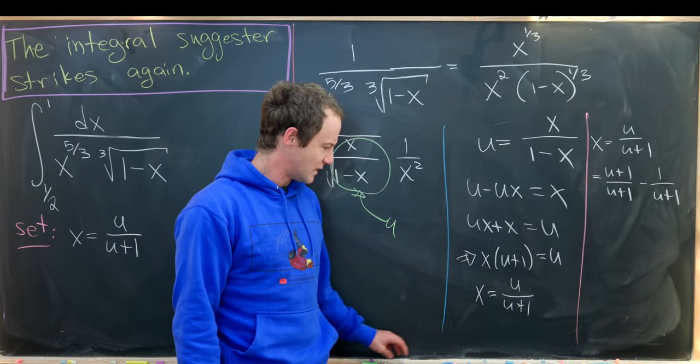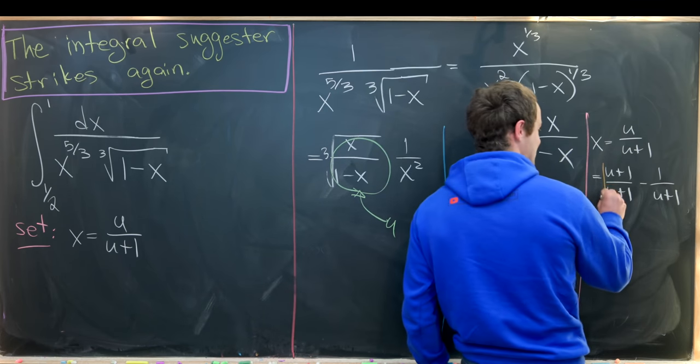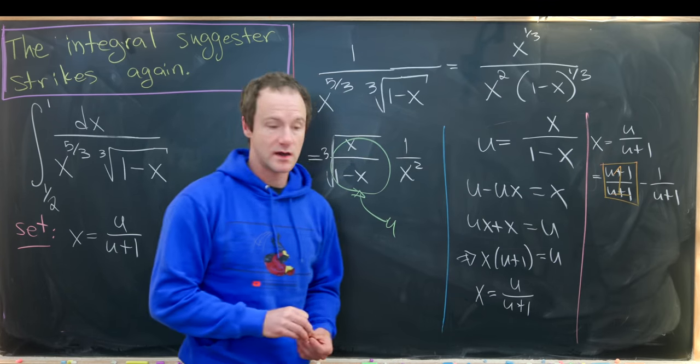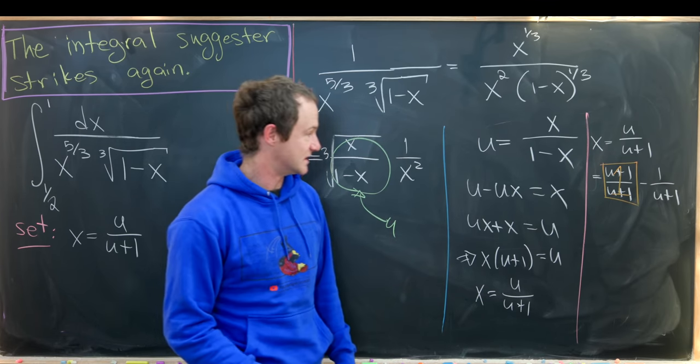You might say, well, what's the advantage here? The advantage is that this number that I'm boxing in orange is the constant 1, so that when I take the derivative, it's just equal to 0.